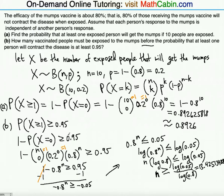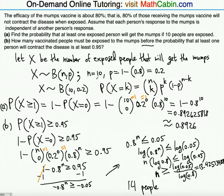Interpreting this result: for the probability to be at least 95%, the N value must exceed 13.42. Since the number of people must be a positive integer, we round up to 14. So at least 14 people must be exposed to the mumps before the probability that at least one of them contracts the disease reaches 0.95. The answer is 14 people. Thanks for watching — see you in the next video.